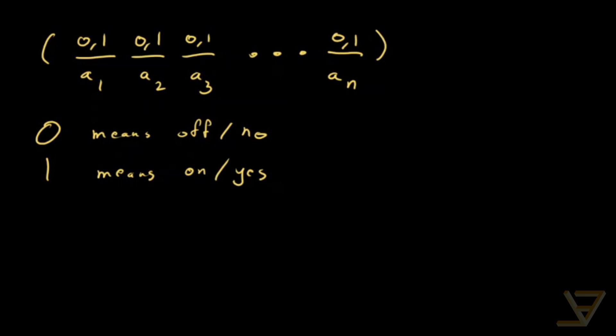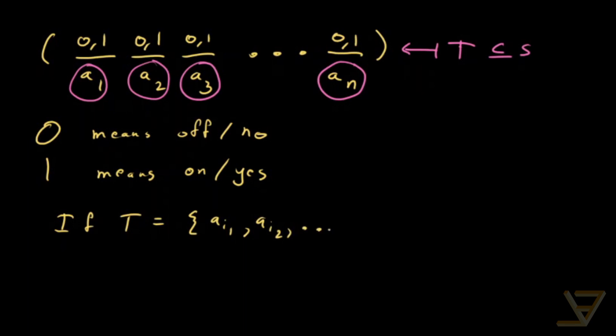So as you can tell, if we have T as a subset of S and we're mapping T into such a list, it's just a matter of whether T contains a1 or it contains a2 or it contains a3 or it contains an. So formally what we're going to be doing is that if T equals the set a_i1, a_i2, all the way through to a_iK for some integer k less than or equal to n.